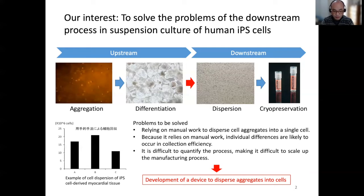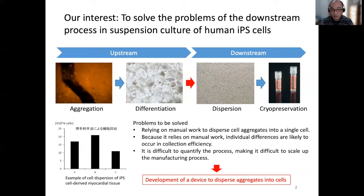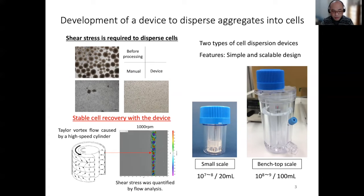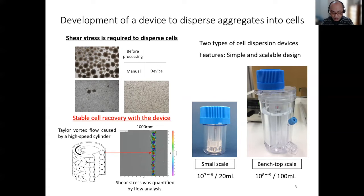We are trying to solve this problem by developing a scalable device that can efficiently disperse cells instead of manual operation. To disperse cell aggregates into single cells, shear stress is required to dissociate adhesion between cells. In the manual cell dispersion process, shear stress is applied by pipetting. The cell dispersion device we have developed is equipped with a simple rotating cylinder, characterized by applying a constant shear stress by rotating the cylinder at high speed.